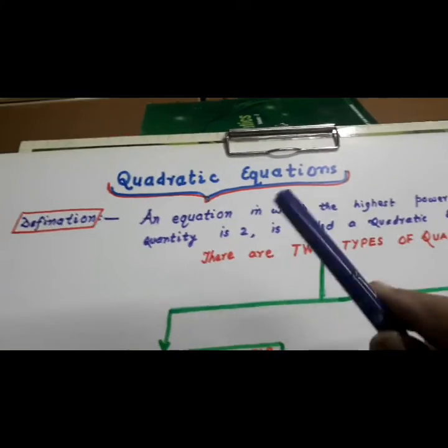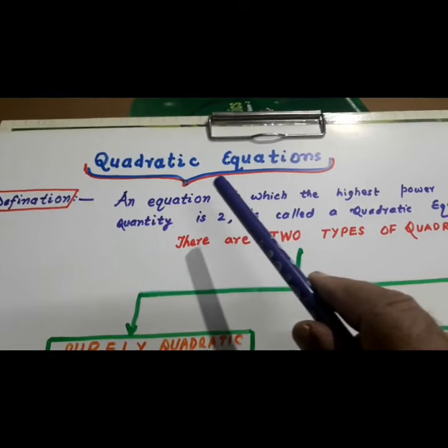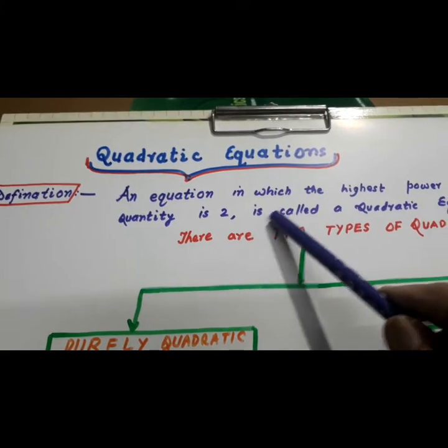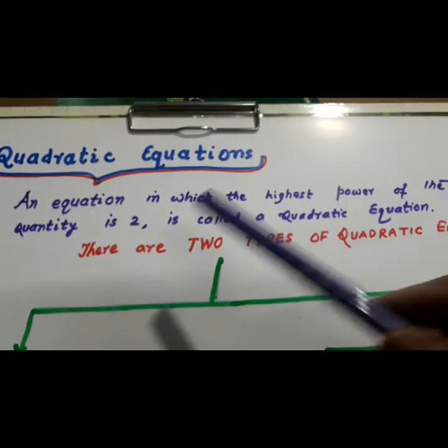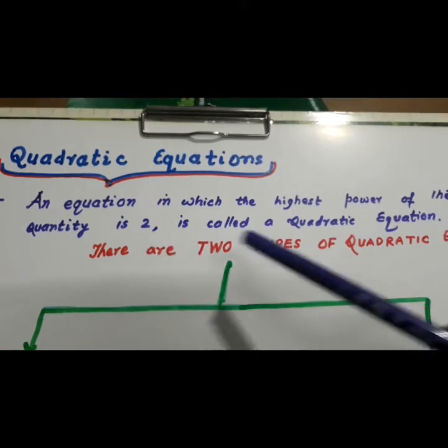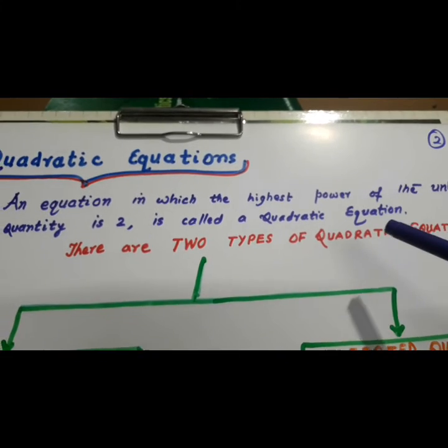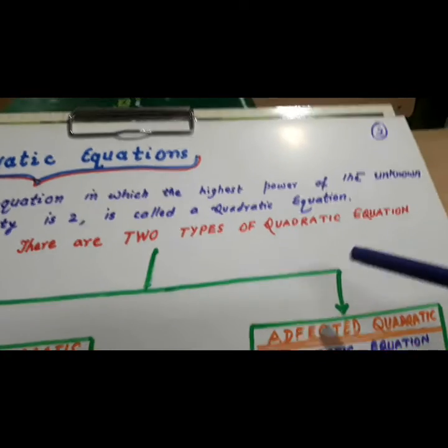Now, look here. Quadratic equations. An equation in which the highest power of unknown quantity is 2 is called quadratic equation. There are two types of quadratic equations.